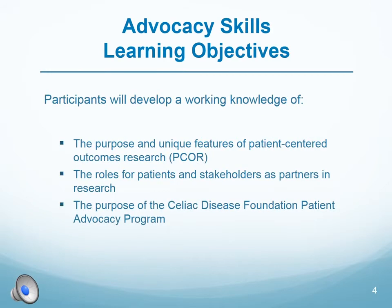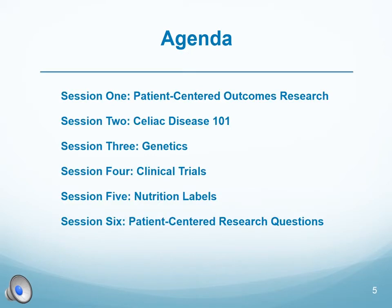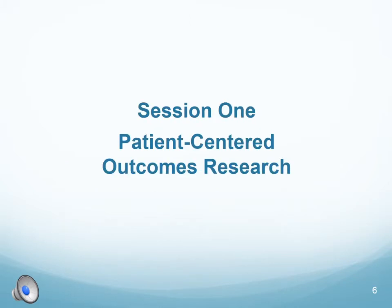You will also understand the purpose and unique features of patient-centered outcomes research, the roles for patients and stakeholders as partners in research, and the purpose of the Celiac Disease Foundation Patient Advocacy Program. There are six modules in this program that focus on patient-centered outcomes research, celiac disease basics, genetics, clinical trials, nutrition labels, and patient-centered research questions.